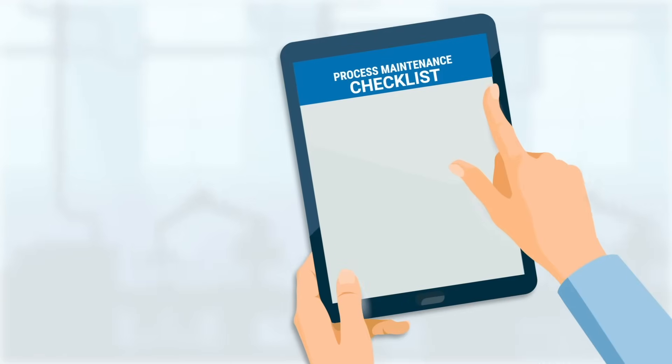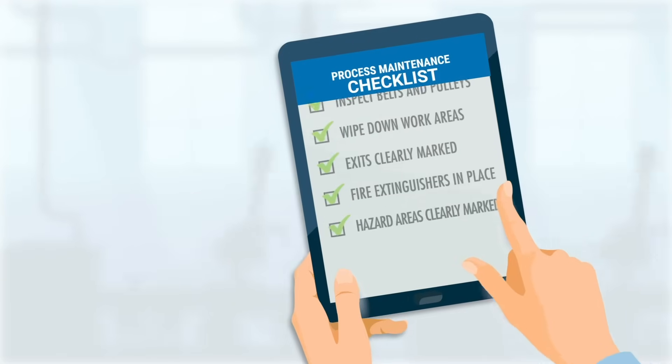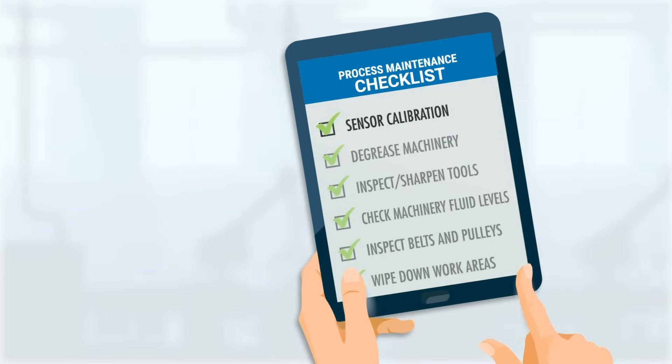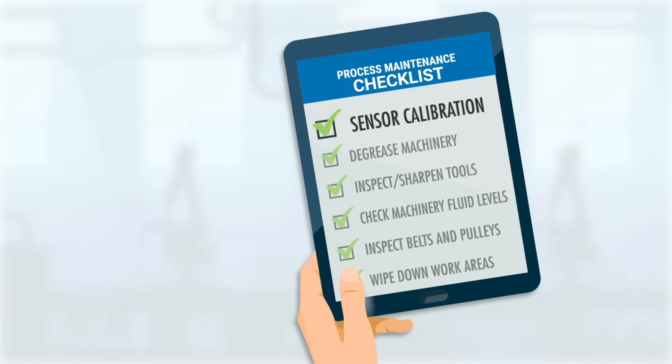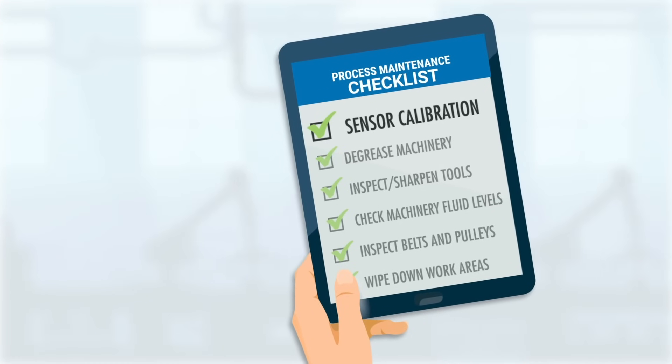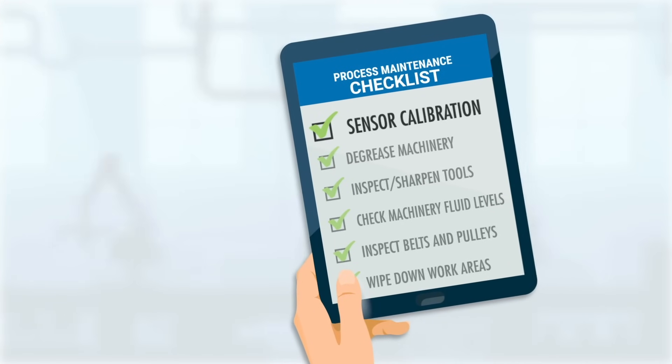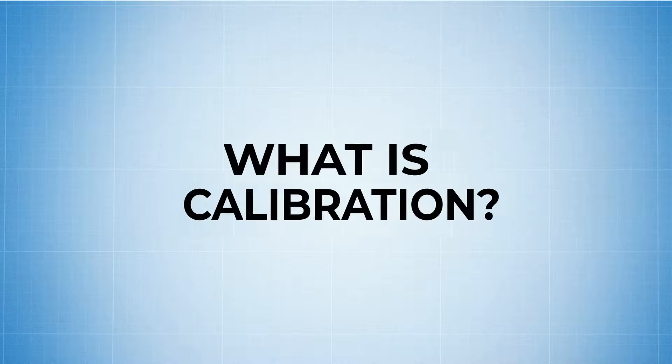That's why maintaining your devices at their highest levels of accuracy through periodic calibration is one of the most important parts of any process maintenance program.